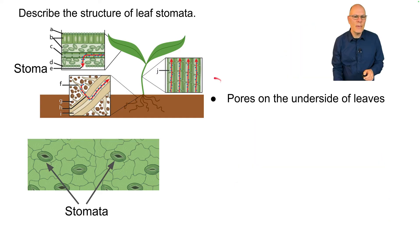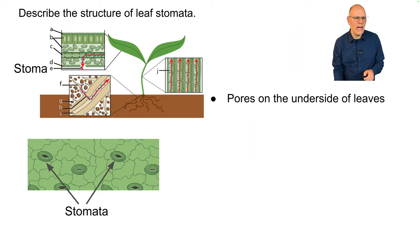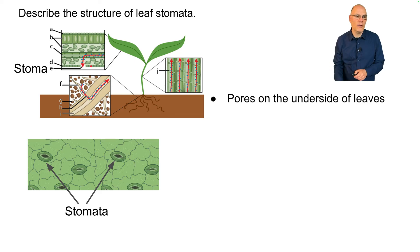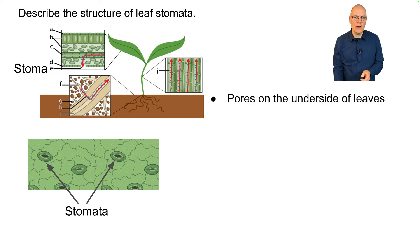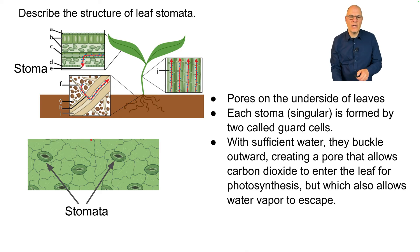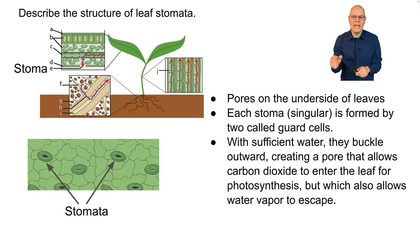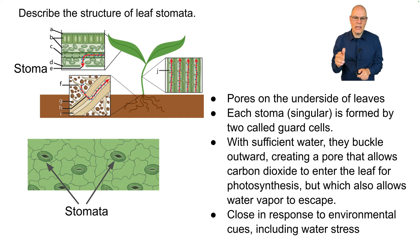Describe the structure of leaf stomata. Stomata are pores on the underside of a leaf. In a microscopic cross-section, you'd see layers of cells: the top and bottom layers waterproof the leaf and are covered with wax, but the leaf still needs to be open to exchange gases and other materials. Each stoma — singular; stomata is plural — is formed by two guard cells. When there is sufficient water, these guard cells buckle outward, creating a pore that allows carbon dioxide to enter for photosynthesis but also allows water vapor to escape. Stomata can close in response to environmental cues including water stress and open when water is abundant.